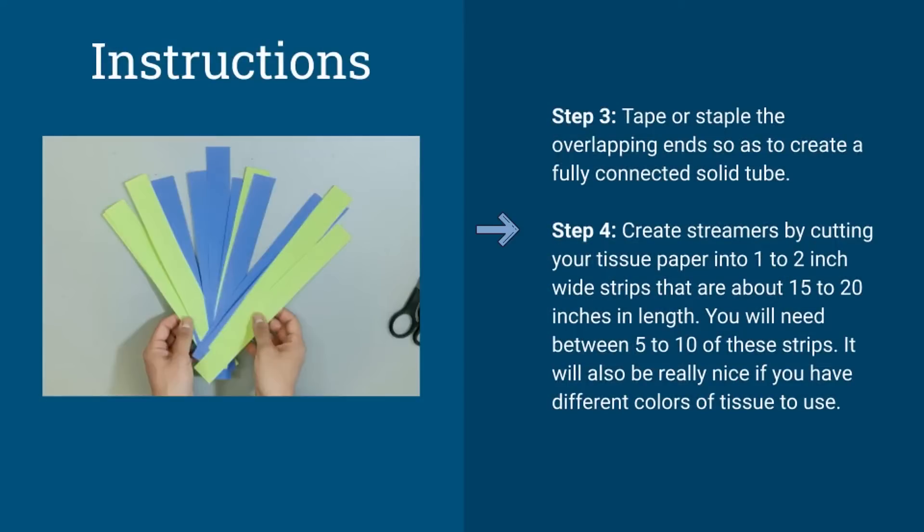Step four. Create streamers by cutting your tissue paper into one to two inch wide strips that are about 15 to 20 inches in length. You will need between five to ten of these strips. It would also be really nice if you have different colors of tissue paper to use.